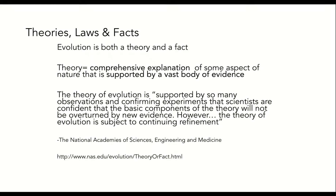Earlier in this series of lectures, I mentioned that evolution is a theory. A theory is a comprehensive explanation of some aspect of nature that is supported by a vast body of evidence. The theory of evolution is supported by so many observations and confirming experiments that scientists are certain that the basic components of the theory will not be overturned by new evidence. Evolution is not a law of science. A scientific law we are all familiar with is the law of gravity. Biology doesn't have laws because nature is much more messy than matter or energy. However, just as you are aware that what comes up must go down, you will learn that it is impossible to avoid evolution by natural selection.